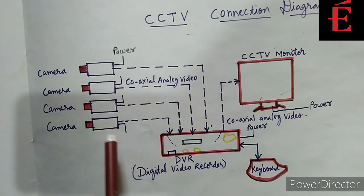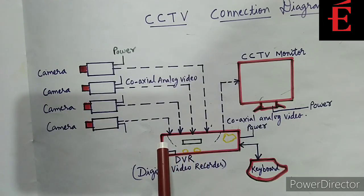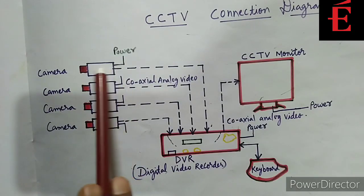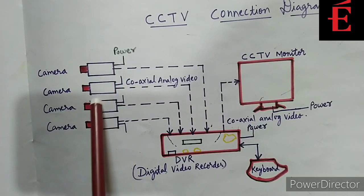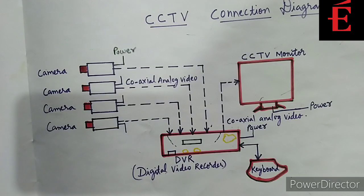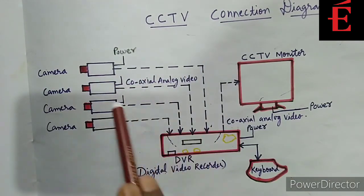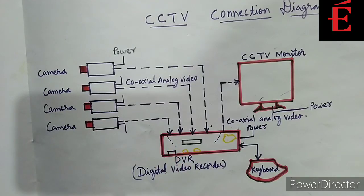If you have to connect 4 cameras, the DVR should at least be of 4 channels or 8 channels. Ensure that all the cameras are connected to the DVR. These 1, 2, 3, 4 CCTV cameras are connected to the DVR by coaxial cables — these are coaxial cables, also called 3+1 wires.